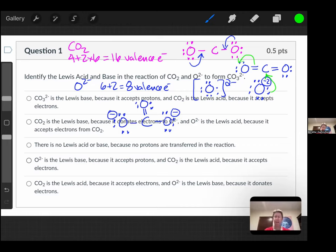So now we just have to look at which answer says that. The thing that donated the pair of electrons was the oxide, so that's going to be the base. The acid, or the Lewis acid, accepted a pair of electrons.